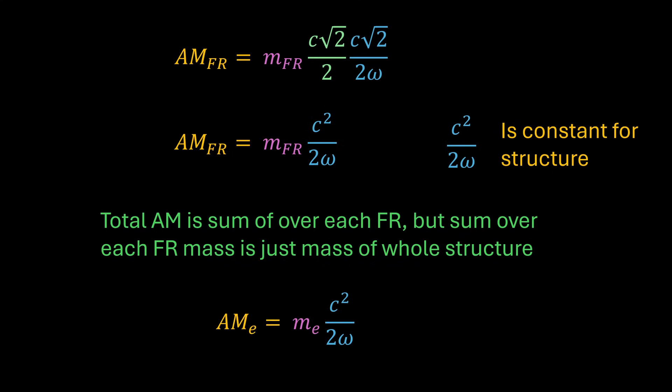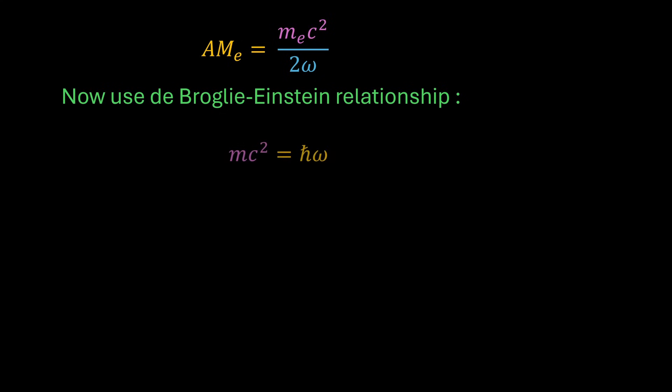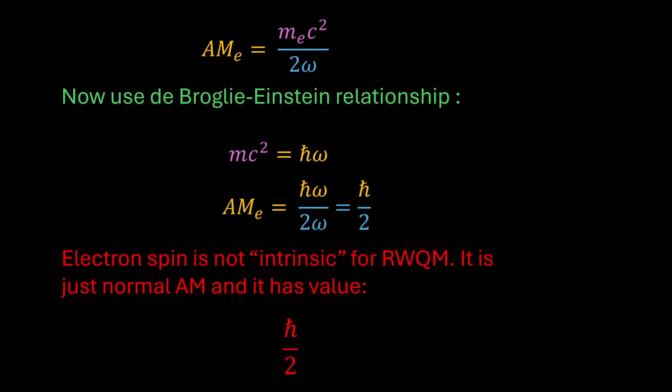We can now use the de Broglie Einstein relationship: E equals mc squared equals ℏω. And substituting and cancelling we get ℏ over 2. So on this analysis spin is not intrinsic but is a normal angular momentum, albeit that the only mass involved is the mass equivalent of the energy content of the FRs.